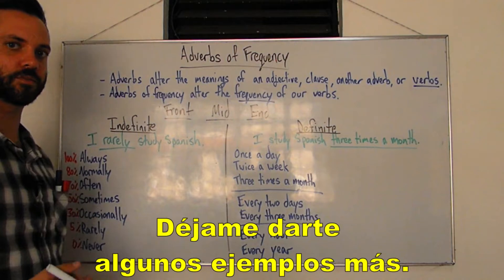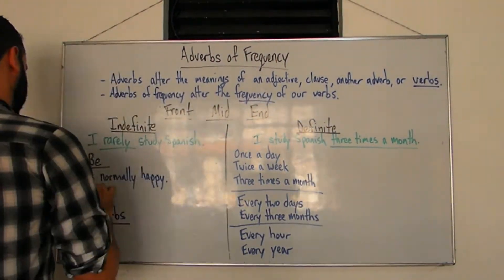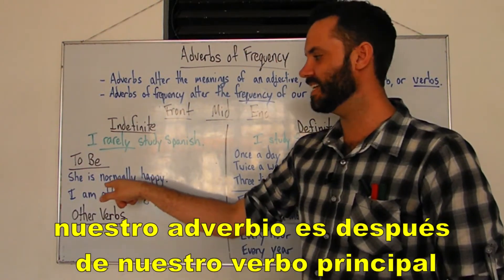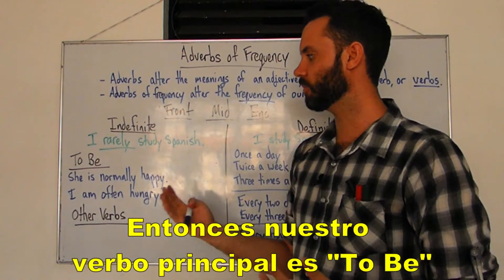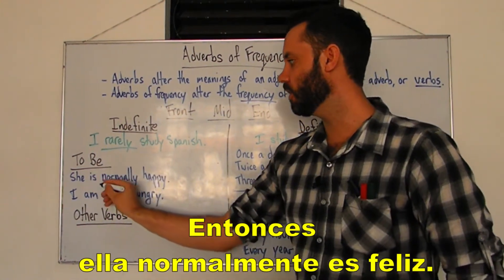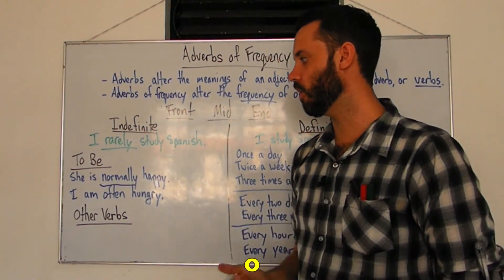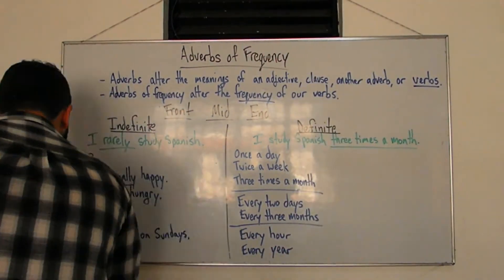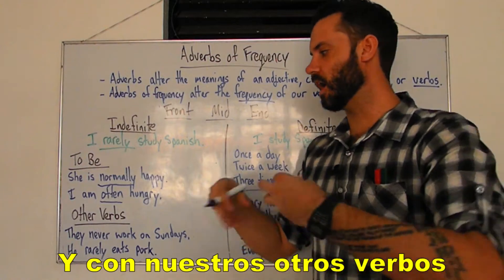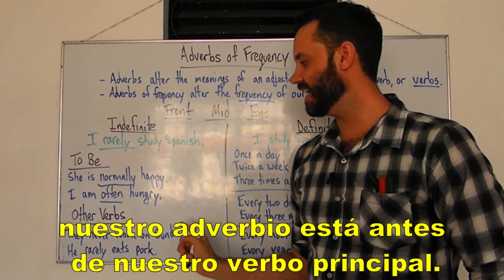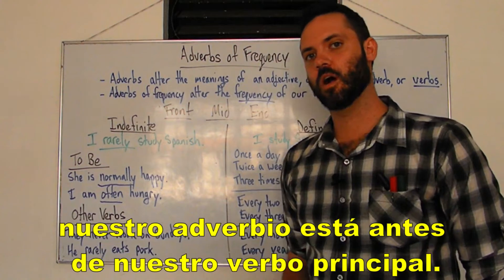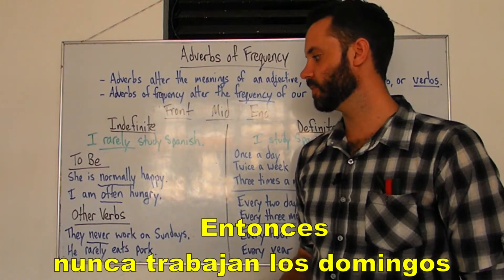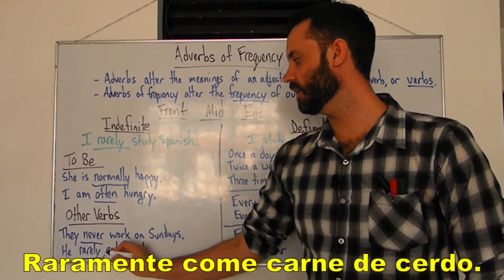So let me give you some more examples. With our verb to be, our adverb is after our principal verb — so our principal verb is to be. For example: she is normally happy, or I am often hungry. And with our other verbs, our adverb is before our principal verb. For example: they never work on Sundays, or he rarely eats pork.